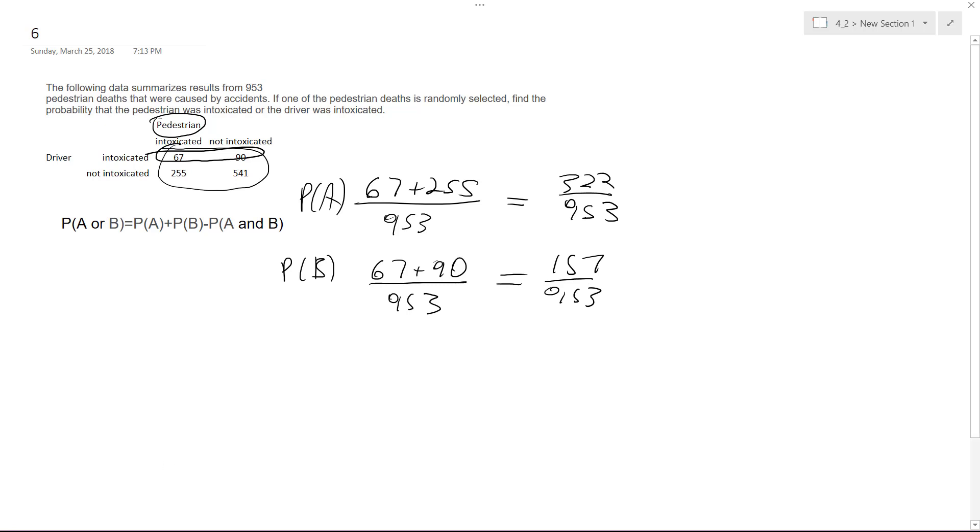So finally, the case where it's P of A and B, it's going to be equal to 77 over 953. Oops, that's not right. It should be 67. It's where they both overlap and it says they're both intoxicated, which is the top left. So 67.